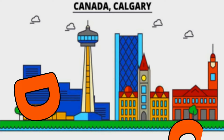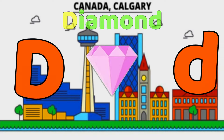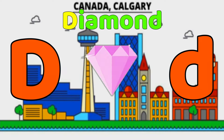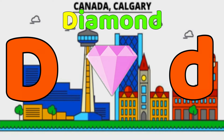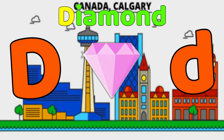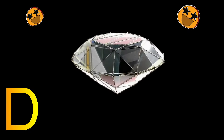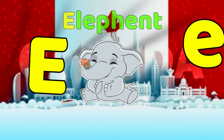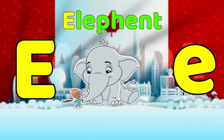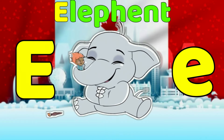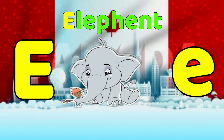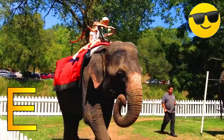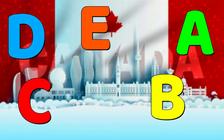D is for Diamond. D, Diamond, D. E is for Elephant. E, Elephant, E.